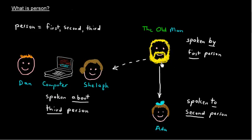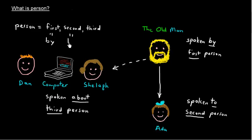I is first person. You is second person. He, she, and it are all third person words. So just remember: first equals by, second equals to, and third equals about.